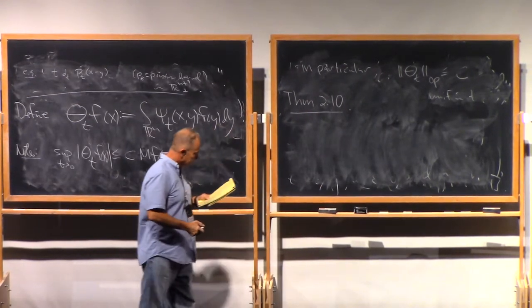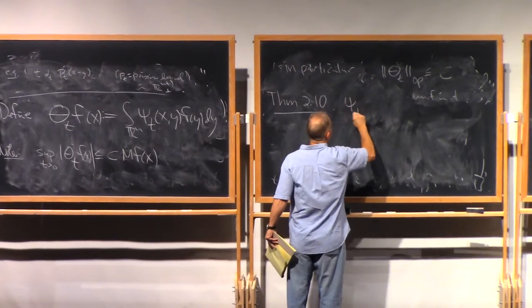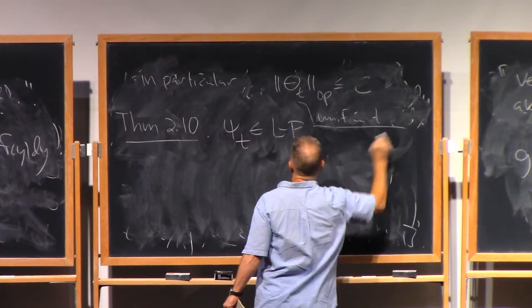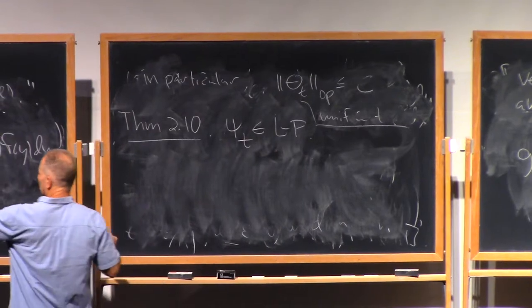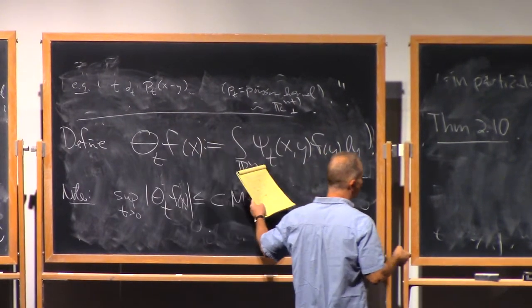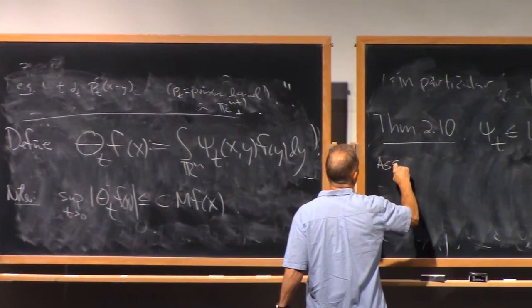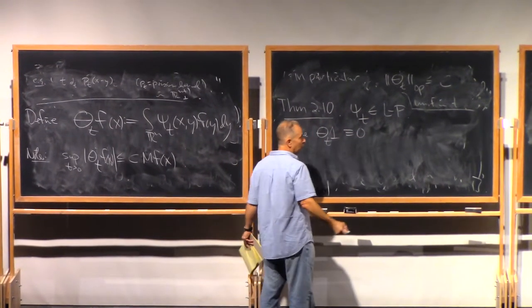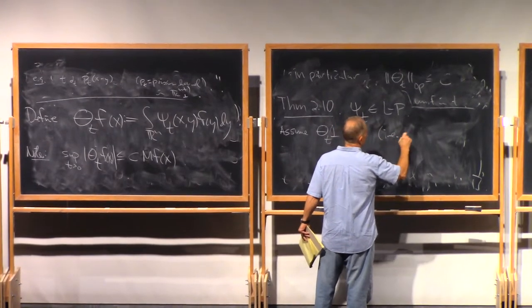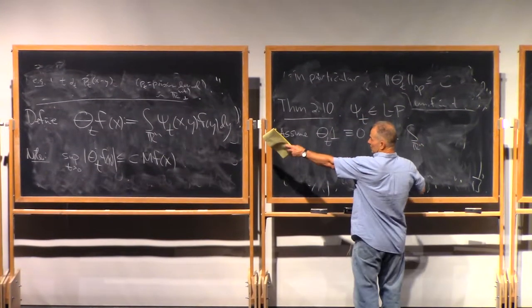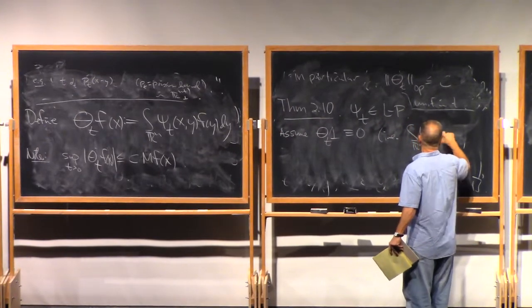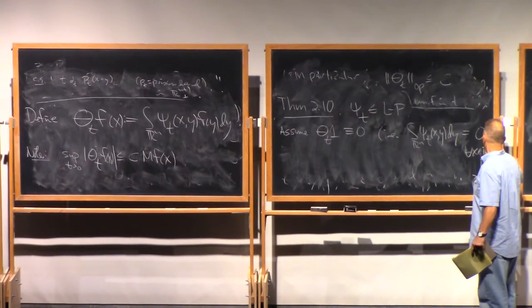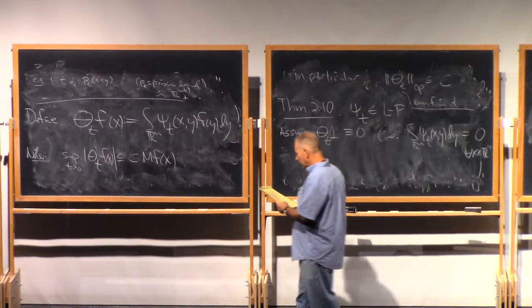So let's see, can I do this in five minutes? All right. So, we're going to assume that we have a family of operators that belong to this Littlewood-Paley class. Theta_t is going to be defined this way. And we're going to assume further that theta_t of 1 is identically zero, which means, in other words, that if you integrate this expression with f set equal to one, this is going to equal zero for all x in Rn.